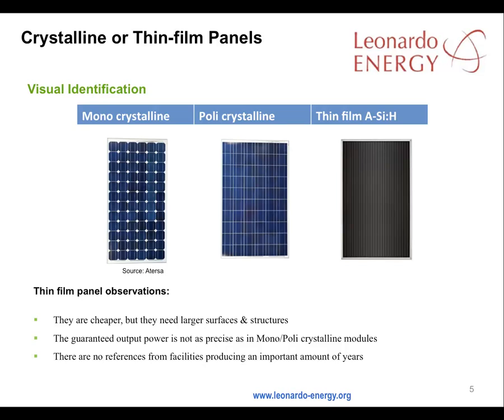The advantages and disadvantages of monocrystalline, polycrystalline, and thin film solar panels will need to be considered. Thin film panels are cheaper, but they convert a smaller percentage of light to energy, so they need larger surfaces and structures.